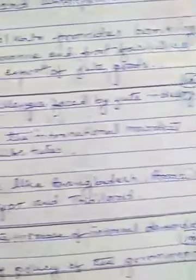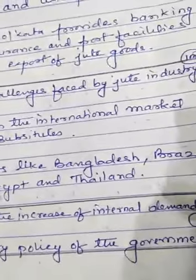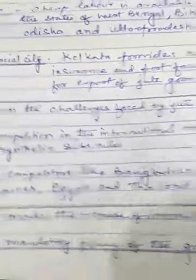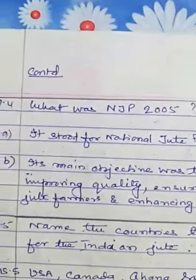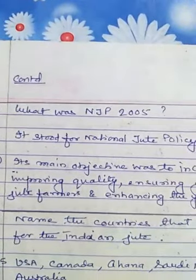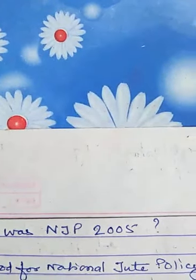Question 3: what has led to the increase in internal demand for jute? This is a one mark question. It is due to the mandatory policy of the government — the government has legally made it compulsory for all state governments and the central government to use jute for packaging purposes. They will not use synthetic fibers in any case. All state, local, and central governments will use jute for packaging to sustain this industry which is facing challenges.